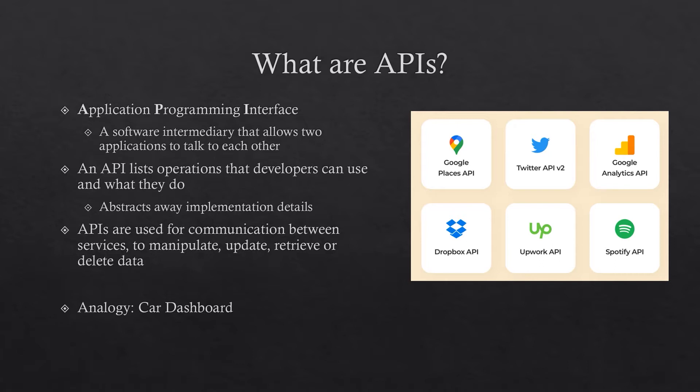In some ways this is similar to object-oriented programming concepts, where we want to abstract away the implementation details so we only care about what the operation is and how to call a method to get a desired result. APIs, in the way that we will use them, are used to communicate between services and to manipulate, update, retrieve, or even delete data. They're used commonly throughout web development in general.